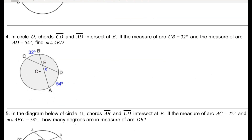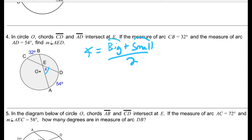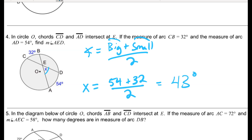For problem 4, I have two intersecting chords — not a central or inscribed angle. The rule for the inside angle is the sum of the arcs divided by 2. I have both arcs, so the vertical angle x equals 54 plus 32 over 2. Simplifying gives a vertical angle of 43 degrees.